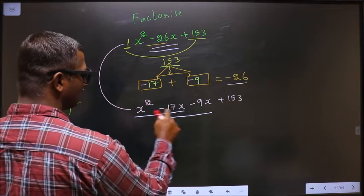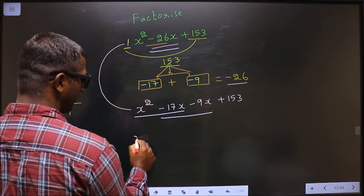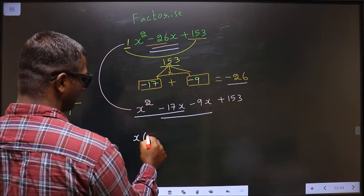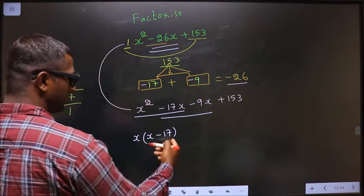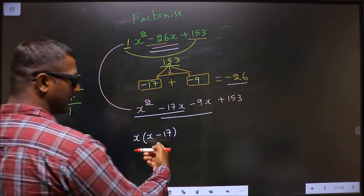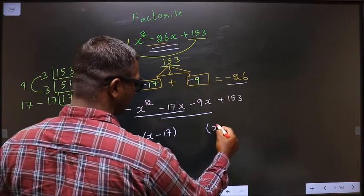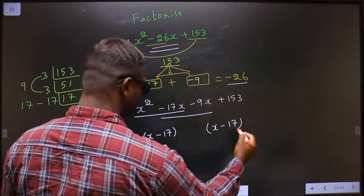What can you take out common from these two terms? Is x. So here I get x and here I get minus 17. Whatever you got in this bracket, here also you should get the same thing.